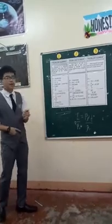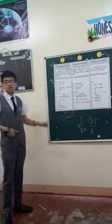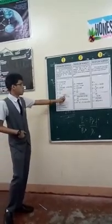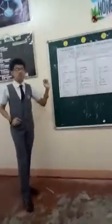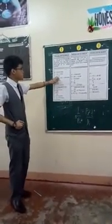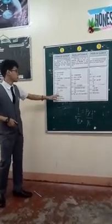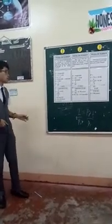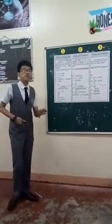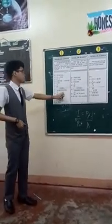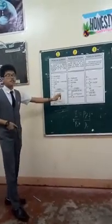So the formula for time equals interest over principal times rate. Then we substitute the given information: our interest is 1,000, and then principal is 1,000,000 times the decimal for 2% which is 0.02. Simplifying the given, we come up with 1 over 20, which in decimal form is 0.05.